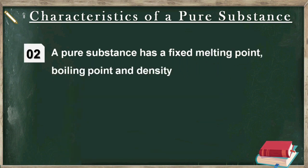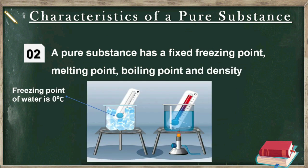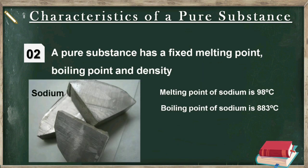The second characteristic of a pure substance is that it always has a fixed freezing point, melting point, boiling point and density. For example, the freezing point of water is always 0°C, the boiling point of water is 100°C, and the density of water is 1 gram per cubic centimeter. The melting point of sodium is 98°C, its boiling point is 883°C, and its density is 0.968 gram per cubic centimeter. These values are always fixed.